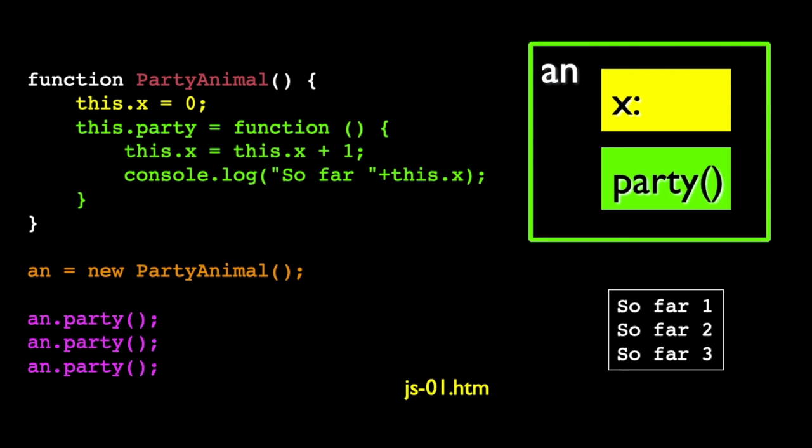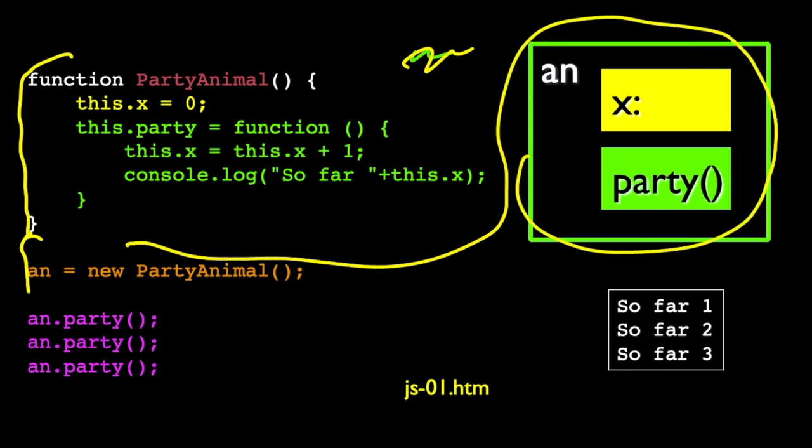If we were to somewhat trace through this, this part here, the function is just a template, that it's remembering the template and naming it PartyAnimal. At the point where we have an equals new PartyAnimal, JavaScript constructs this object. It's got two things in it. It's got an x in it and it's got a party in it. X is data and party is code. The construction also put a zero into this.x. So as a part of the creation, it ran all this code to construct PartyAnimal. And this got set to zero.